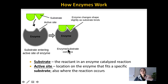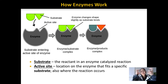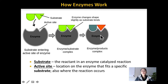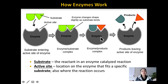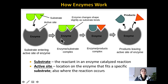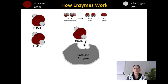Once the substrate enters the active site, the enzyme fits around it and helps to change the chemical bonds and rearrange the atoms, creating something new — the products — which are released. The enzyme is providing a location for the reaction to actually happen. Notice the enzyme did not change at all, and now it's available again for another substrate to come in. It can be reused over and over again.